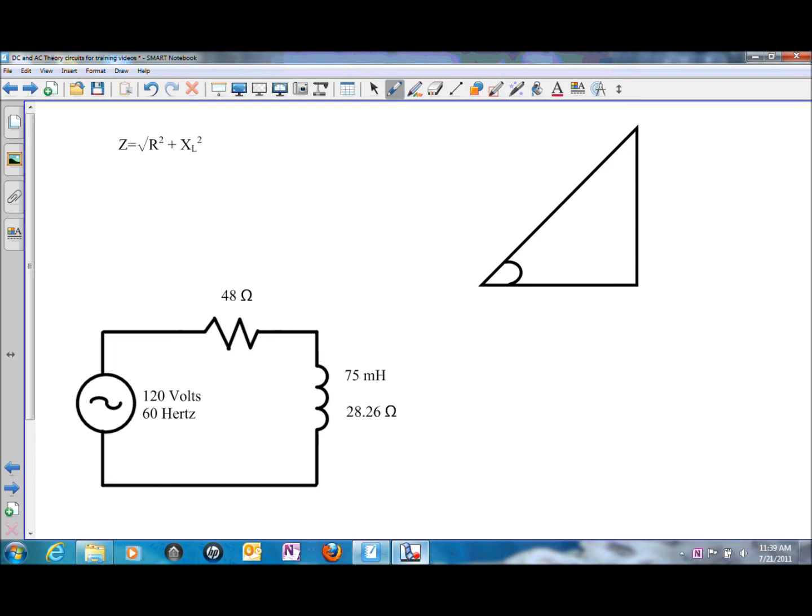The resistance is in phase with the applied voltage and the inductive reactance is 90 degrees different. So we're going to have to use Pythagorean's theorem in order to add those values together. The adjacent side of the triangle, the side being adjacent to angle theta, is the resistive side of the triangle.